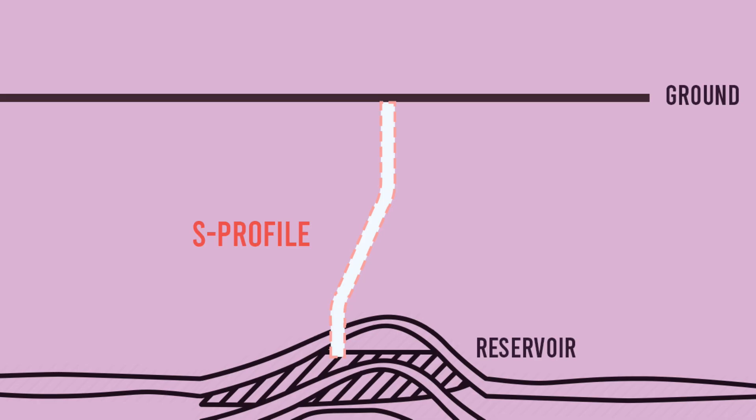It drops back down to a more vertical angle near the bottom. This profile is ideal for reaching deeper reservoirs that are horizontally offset but at a different depth, making it a bit more versatile than the J profile.